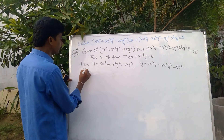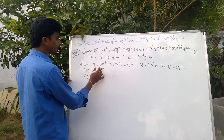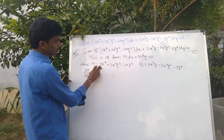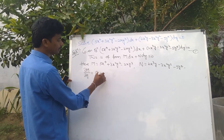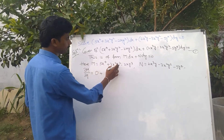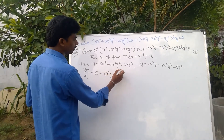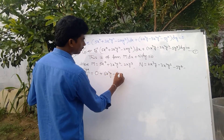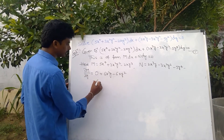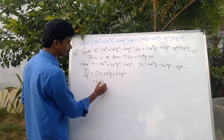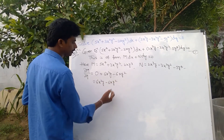Now, ∂M/∂y, differentiating with respect to y: the first term gives 0, the second term gives 6x²y, and the third term gives −6xy². So ∂M/∂y = 6x²y − 6xy².